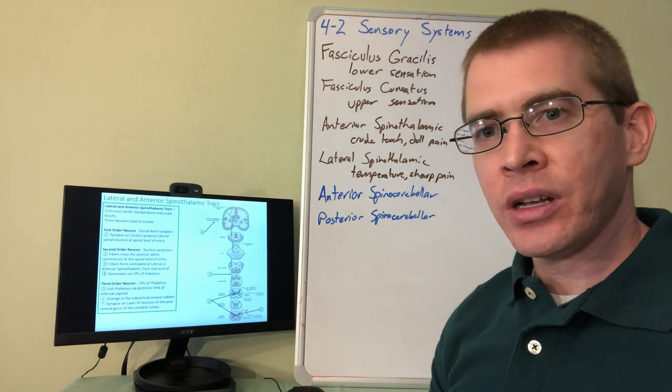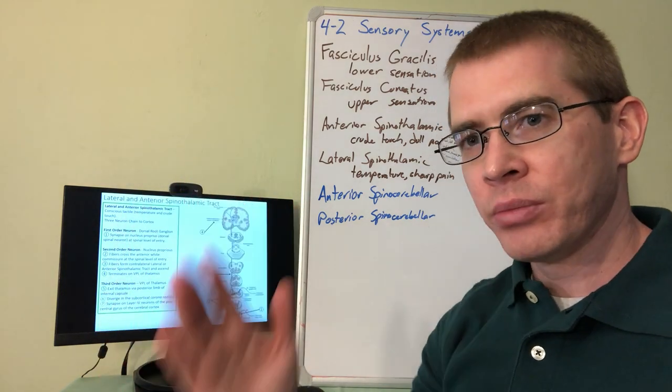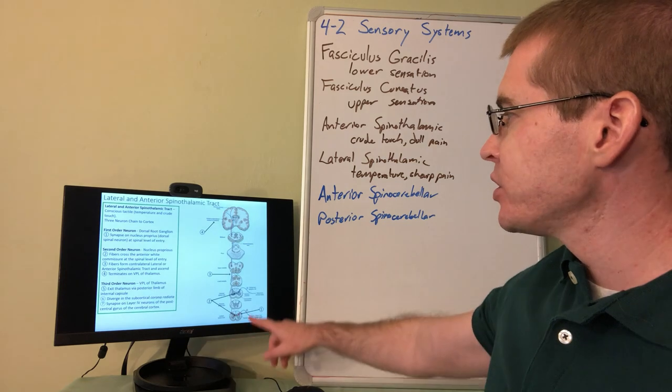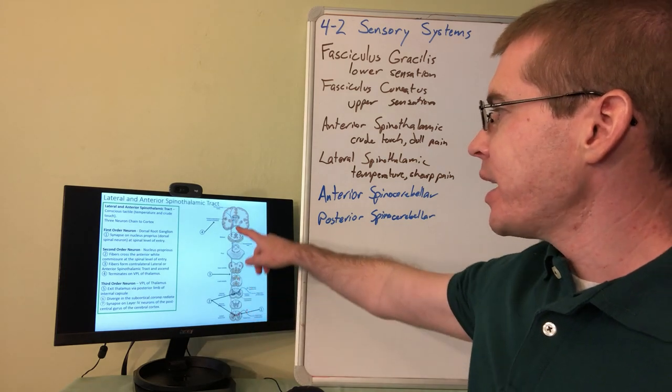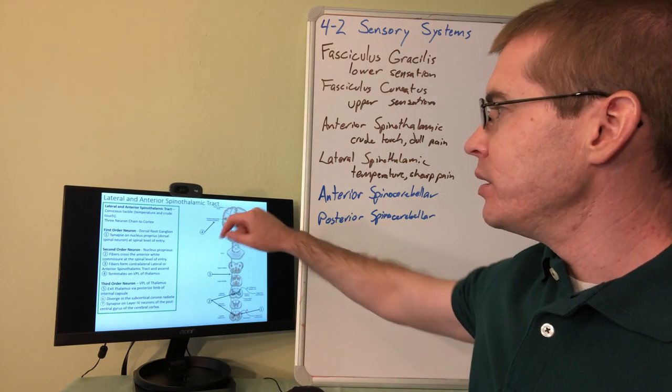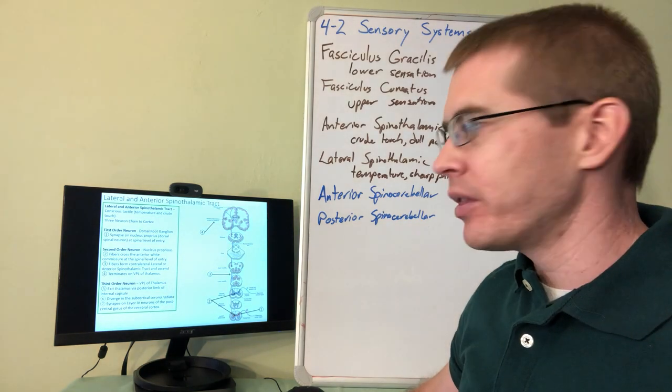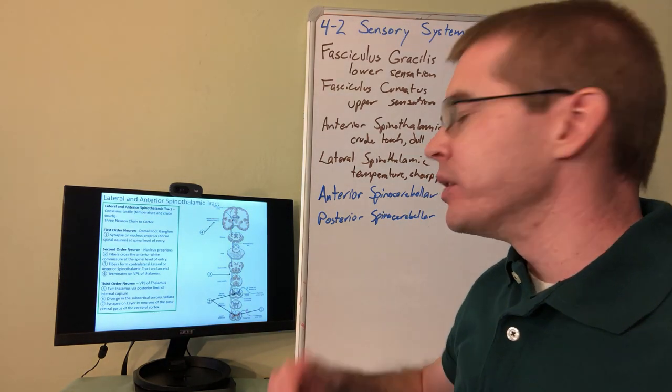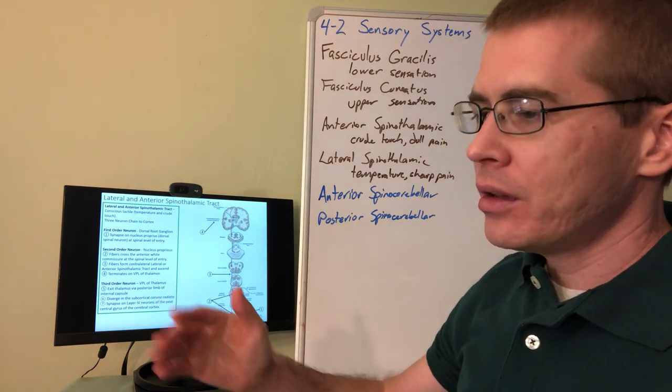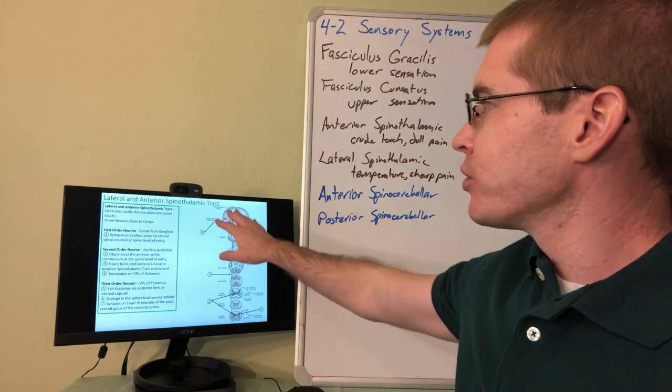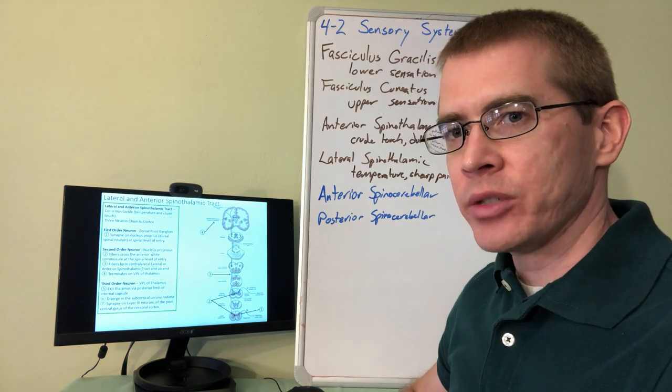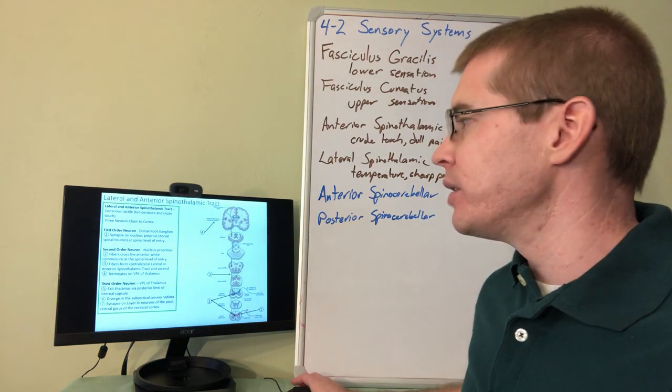And those axons enter the most medial portion of the spinal cord, go up a short distance and then synapse on the thalamus, particularly the VPL of the thalamus, and those third order neurons are going to exit the thalamus and enter the primary sensory cortex behind the central sulcus of the brain.